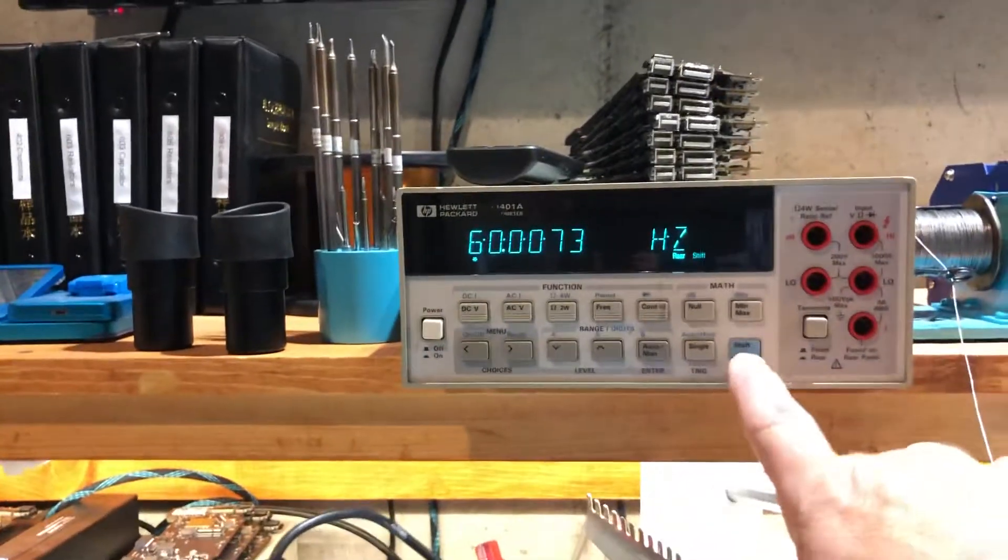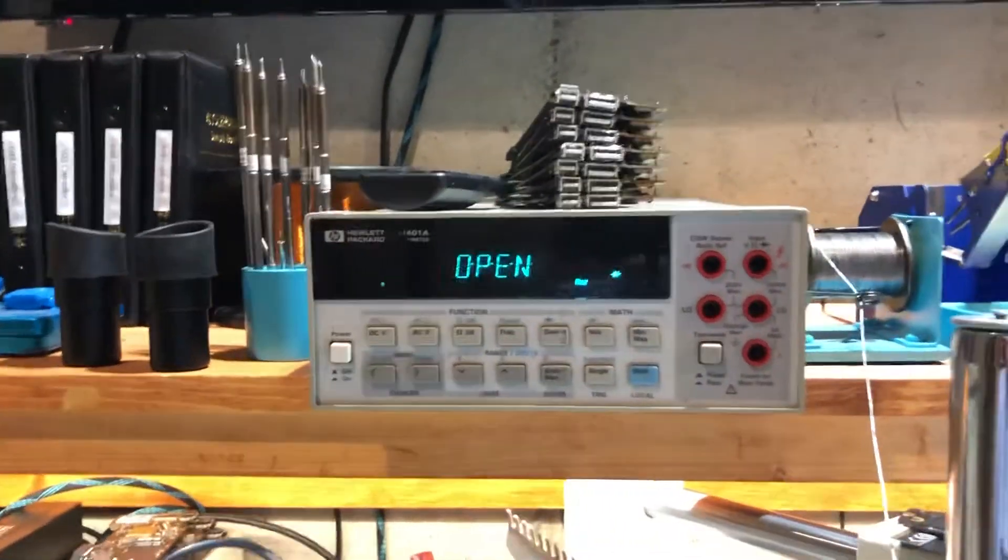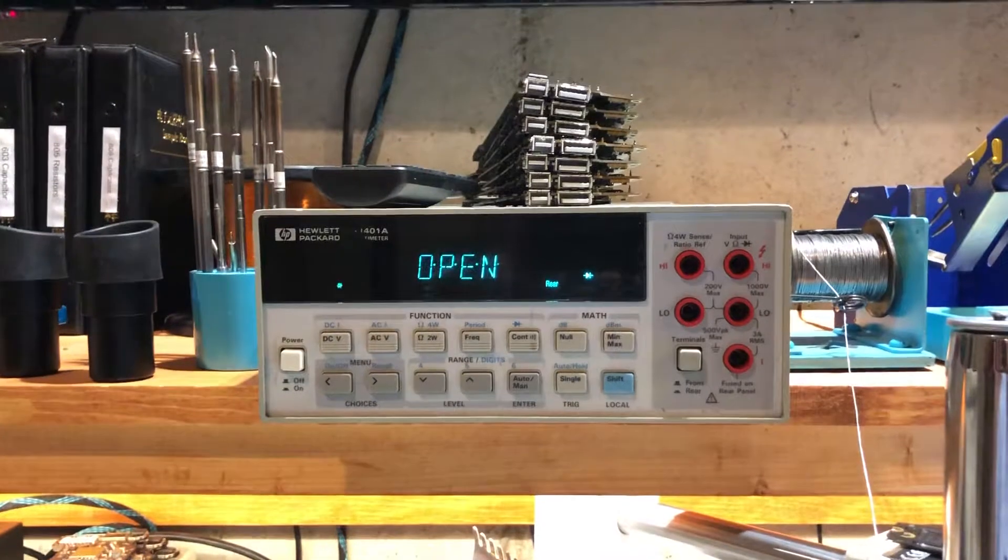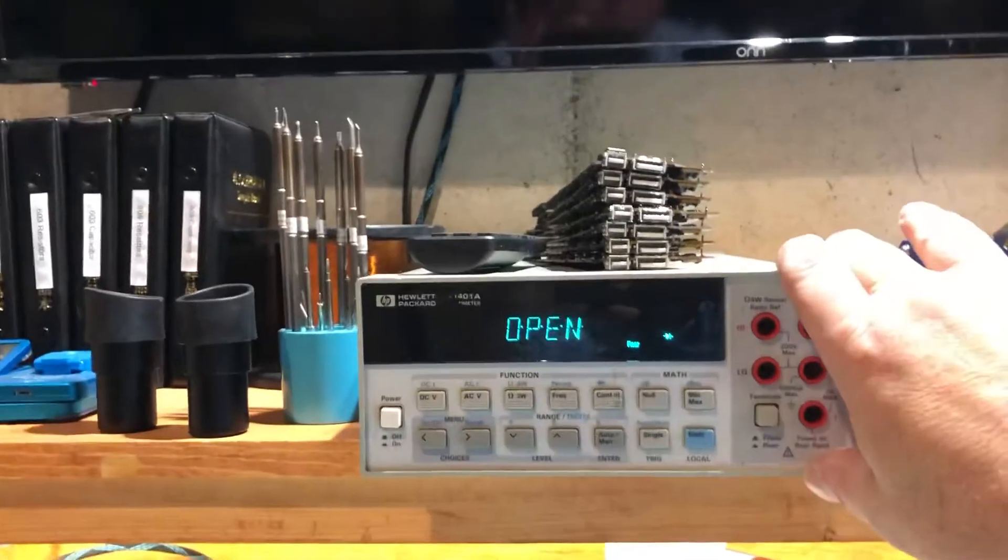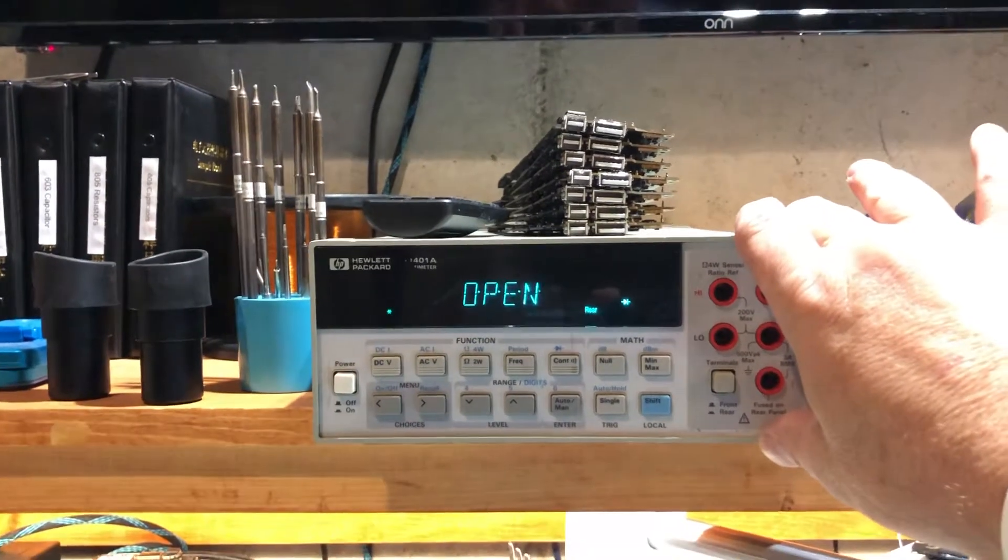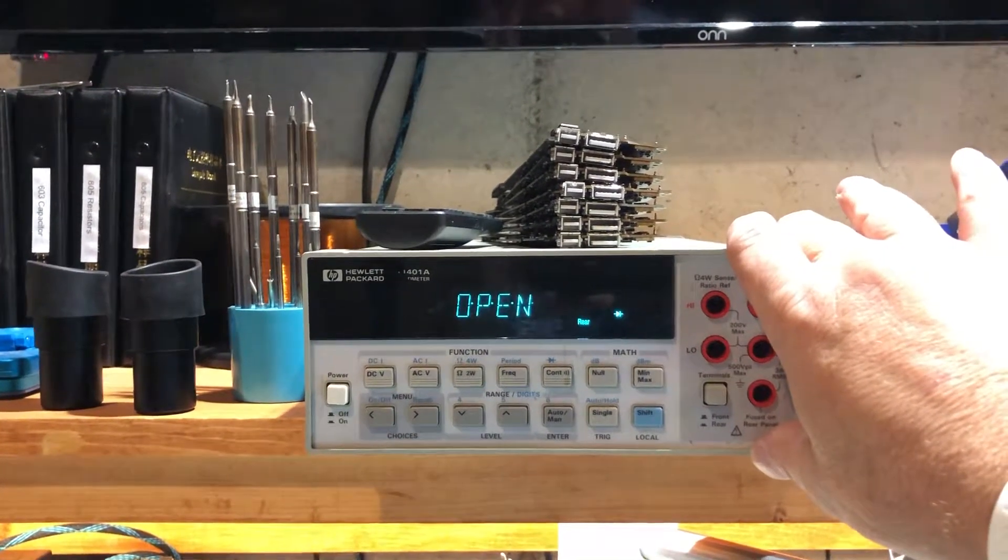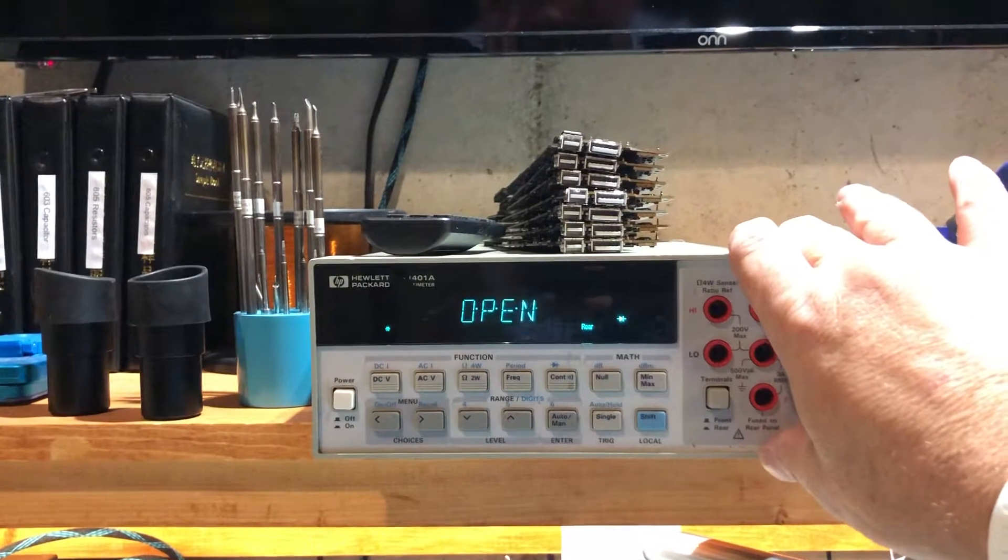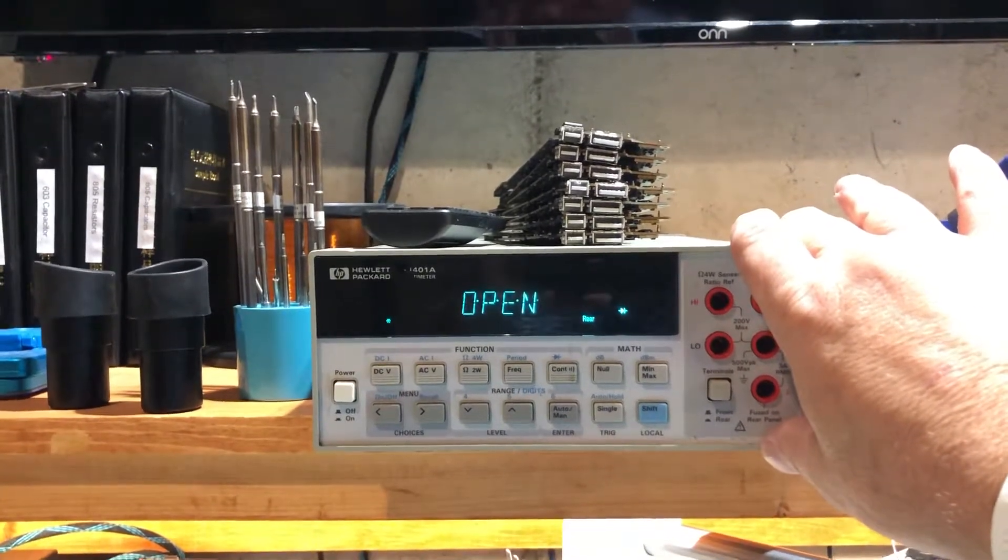The other thing I like is it does have diode check which not all of the bench meters do have. These are really crazy expensive. I picked this one up for like 150 bucks on eBay. It was broken. I get it here and it worked fine. So lucky me. And I was planning on having to work on it, but I didn't have to.